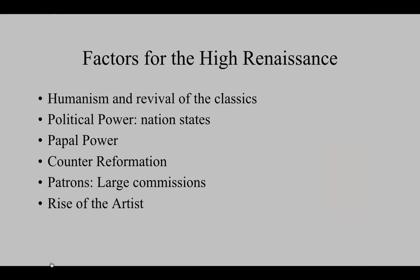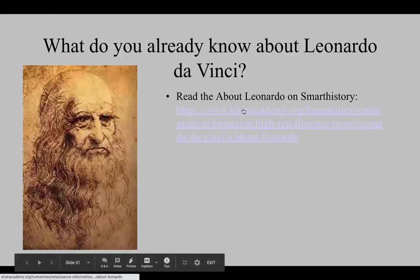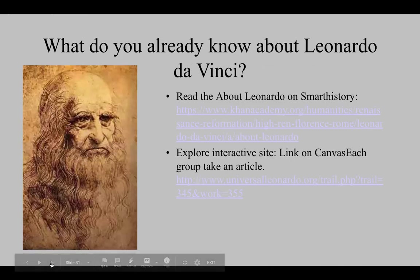Factors of the High Renaissance include humanism, revival of classics, political powers of nation-states, enormous papal power (the Pope was probably one of the most powerful people on the planet), the Reformation and Counter-Reformation, large patrons with enormous commissions, and the rise of the artist. Leonardo was not just a scientist but a painter, sculptor, and engineer — a true Renaissance man, though he had a hard time finishing things and many commissions were never really completed.